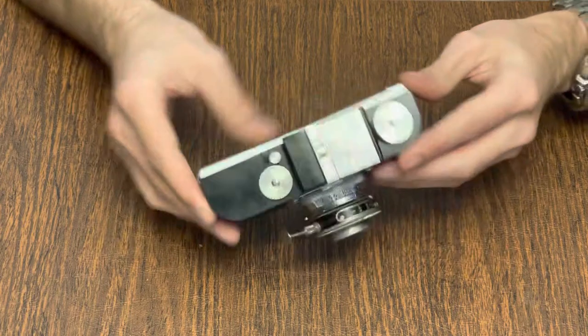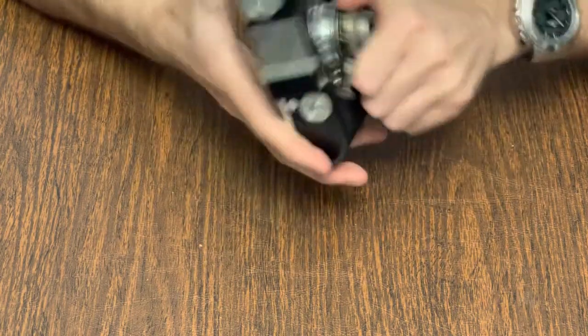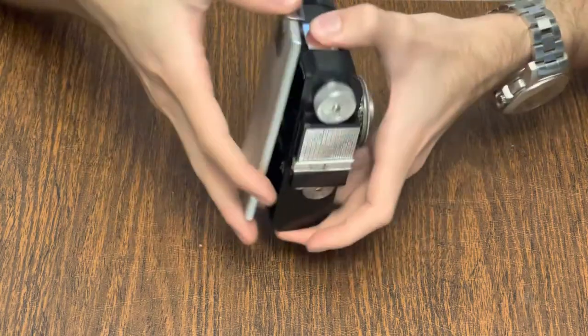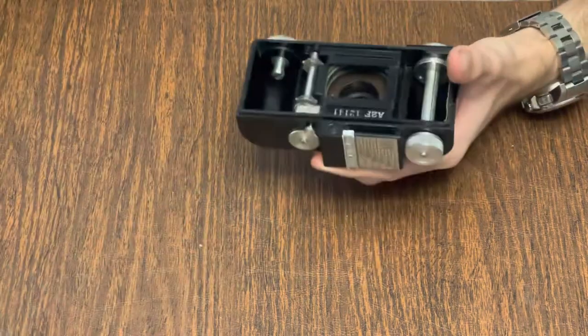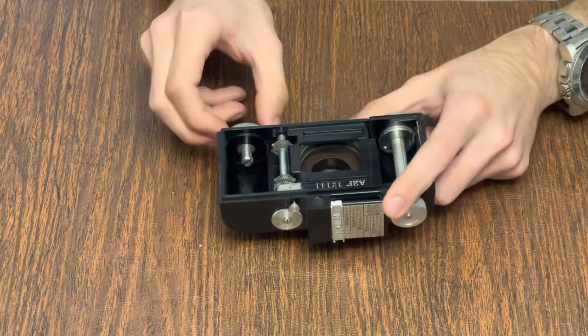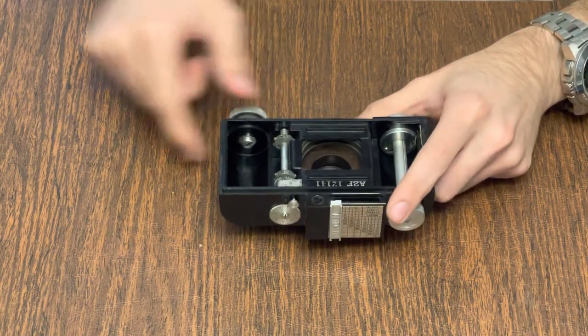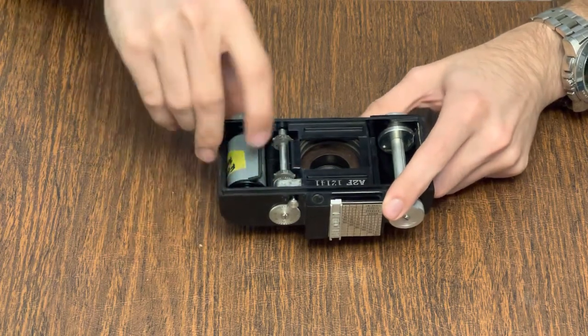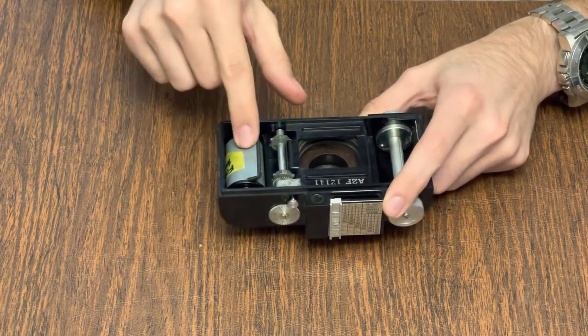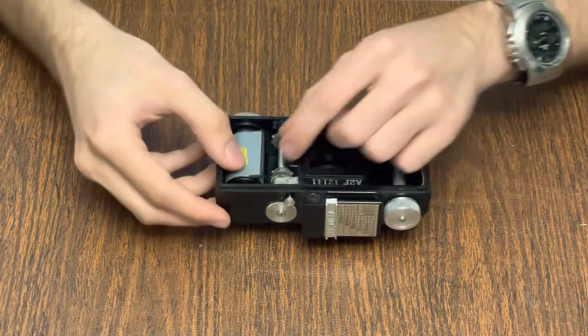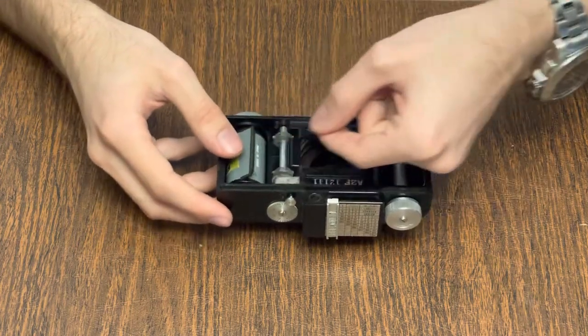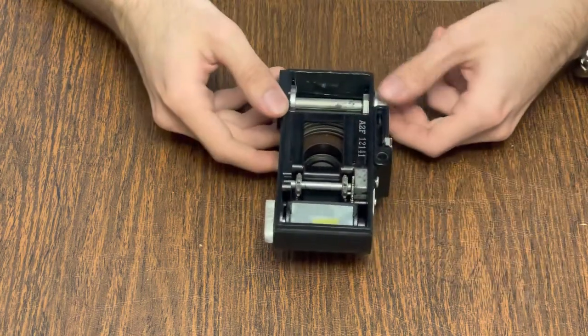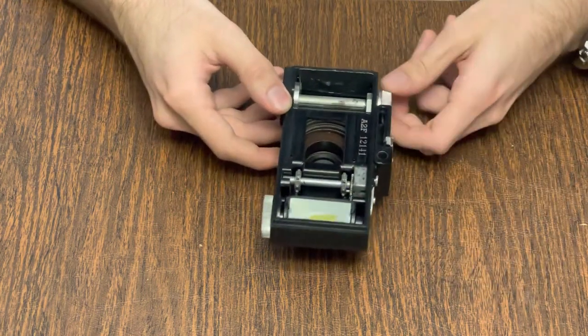To use the Argus A2F you simply open the back of the camera by pressing down on the latch and lifting away. Pull down on the rewind knob and place in a fresh 135 cassette. This one's just a dummy because it's a demonstration. The film is pulled from the cassette and placed into the slot on the take-up spool and wound on for a few turns.